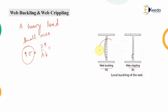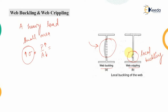If the entire middle portion of the section is buckling about its original axis, that is known as web buckling. But if only some portion is buckling, that is known as web crippling or web crimpling, also called the local buckling phenomenon. Although both phenomena fall under local buckling, web crippling primarily falls under local buckling because it constitutes a local element failing at a local position.